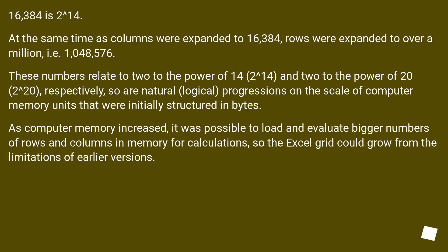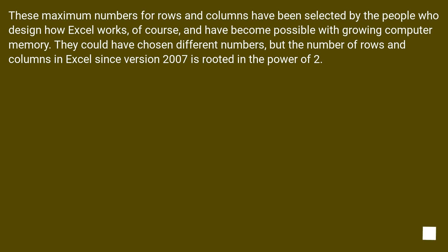So these are natural, logical progressions on the scale of computer memory units, that were initially structured in bytes. As computer memory increased, it was possible to load and evaluate bigger numbers of rows and columns in memory for calculations, so the Excel grid could grow from the limitations of earlier versions. These maximum numbers have become possible with growing computer memory, and the number of rows and columns in Excel since version 2007 is rooted in the power of 2.